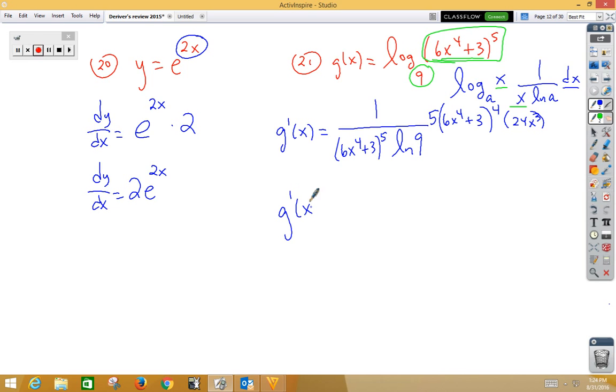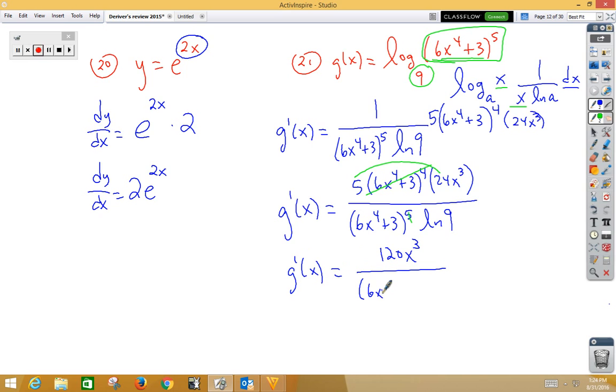So clean that up just a little bit. Let's go ahead and start by putting the 5, the 6x to the 4th plus 3 to the 4th power, the 24x cubed, all over 6x to the 4th plus 3 to the 5th power, natural log 9. Looking at it here, we can see a cancel that we can do, we can probably multiply the 5 times the 24 also. So g prime of x would be equal to 120x cubed over 6x to the 4th plus 3, natural log 9.